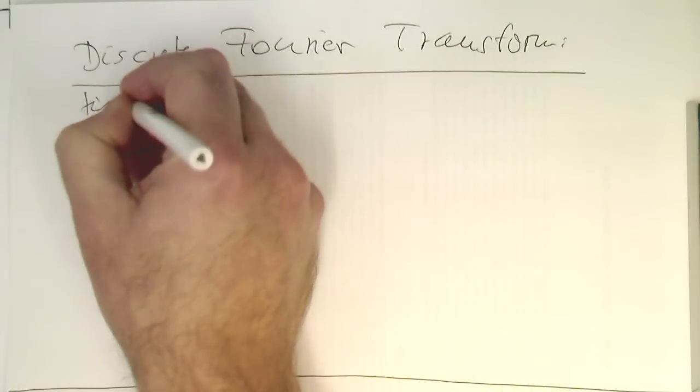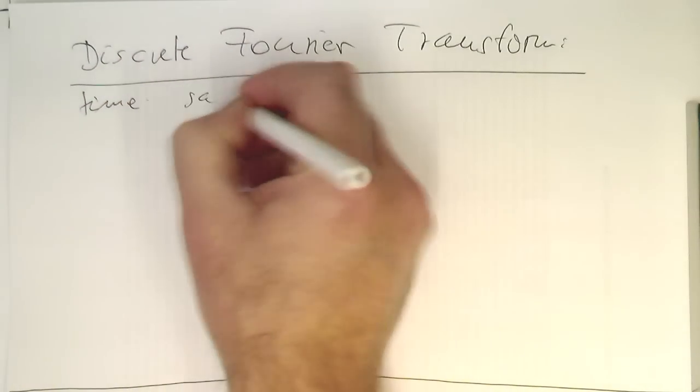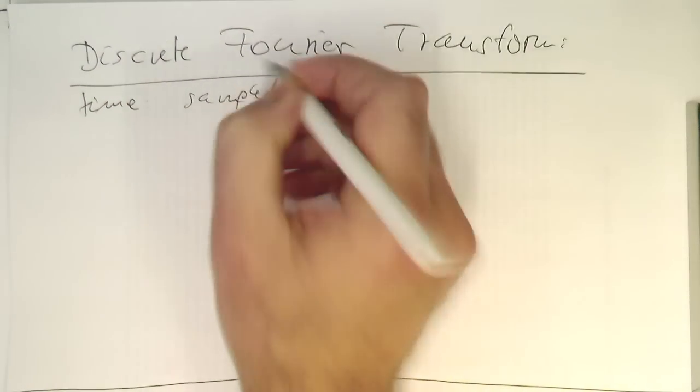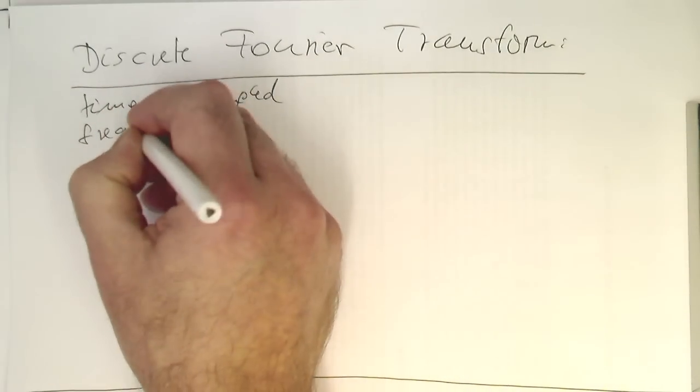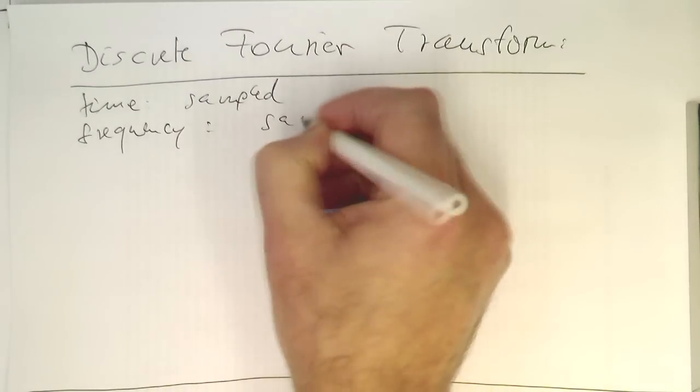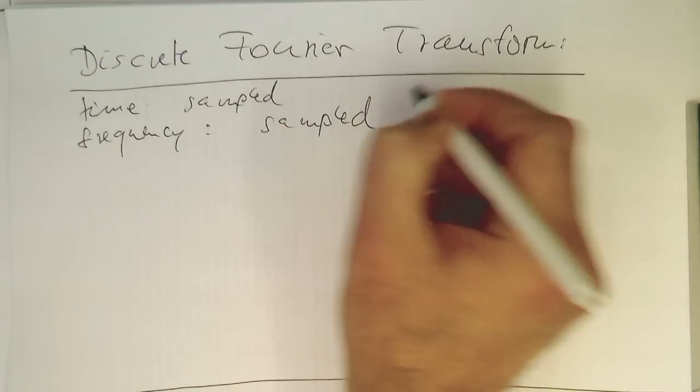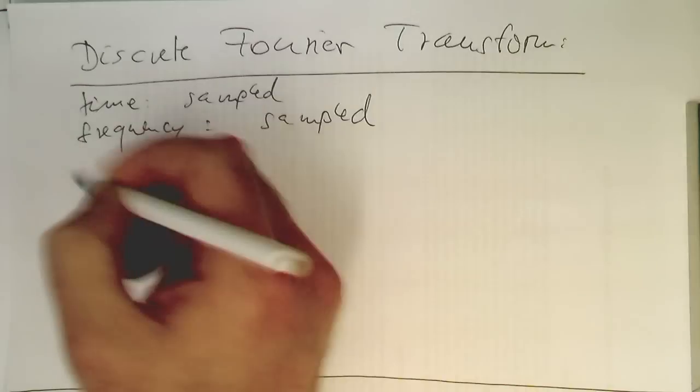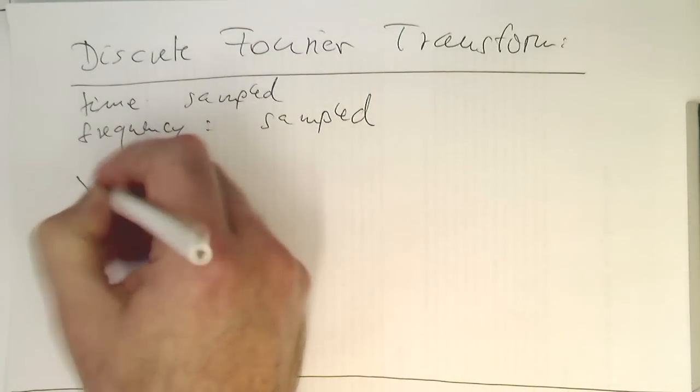This means time is sampled and frequency is sampled. Both are sampled. Let's write down the formulas for this.